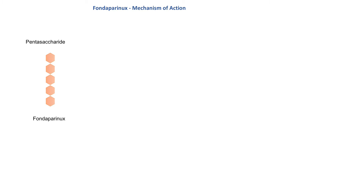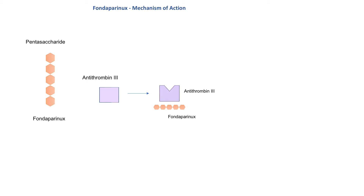The mechanism of action of fondaparinux is similar to heparin. Antithrombin 3 binds to the pentasaccharide sequence, resulting in a conformational change in antithrombin 3 that increases its ability to inactivate Factor Xa. When activated Factor Xa binds to antithrombin, it results in inactivation of Factor Xa. As expected, fondaparinux has no effect on thrombin.